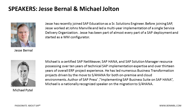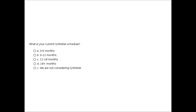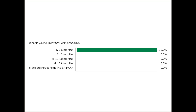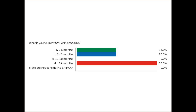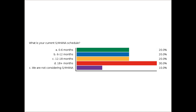Before we begin, we want to get a lay of the land with a couple of poll questions so our speakers can get a feel for the audience. Our first poll question: what is your current S4 HANA schedule? Are you looking at 0–6 months, 6–12 months, 12–18 months, over 18 months, or are you currently not considering S4 HANA at this time? The results look pretty spread out.